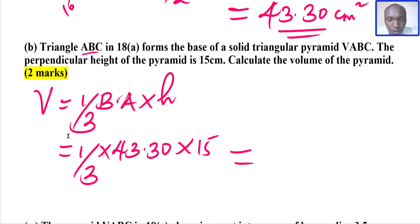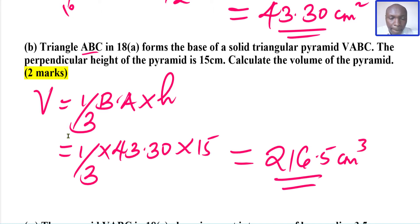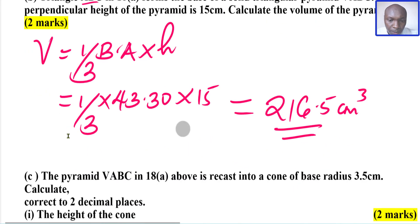This gives us the volume of the pyramid. Calculating one third times base area times height gives 216.5 cm³. That is the answer for the second part.